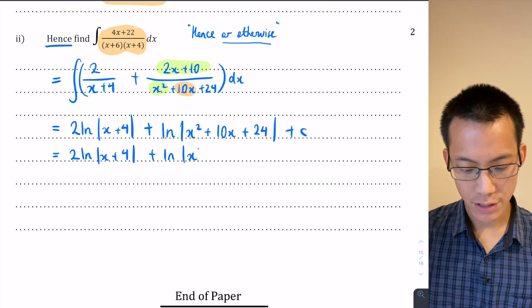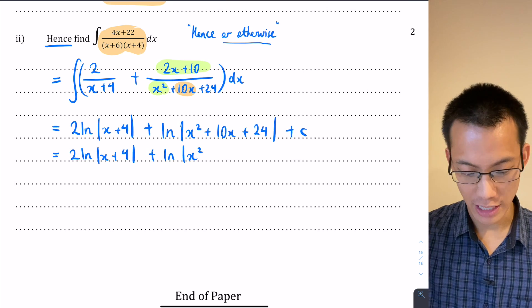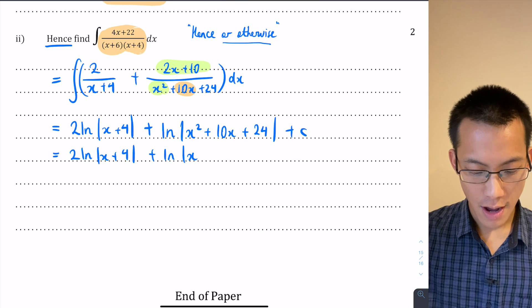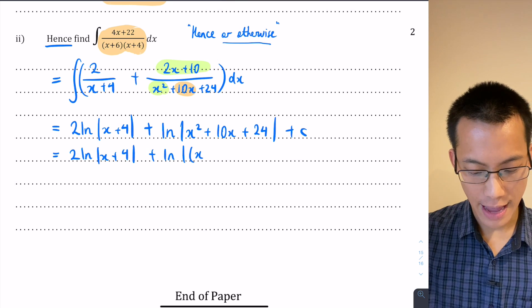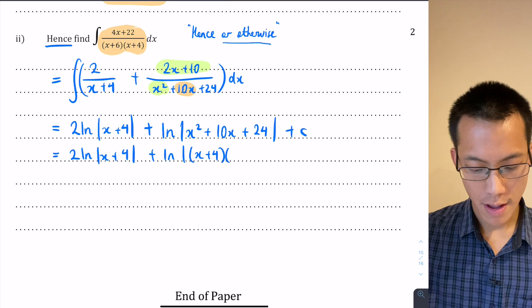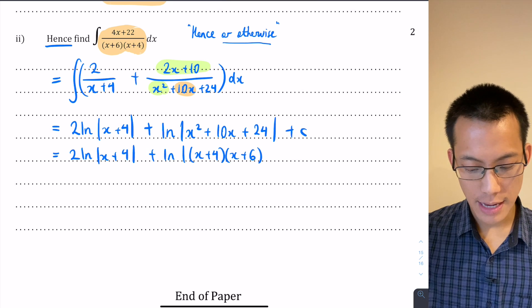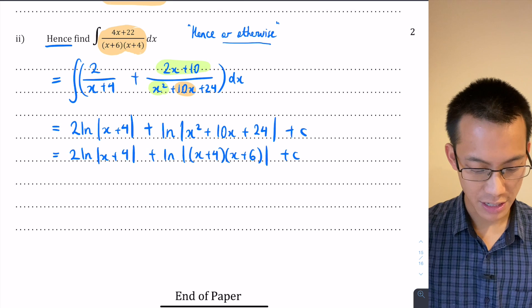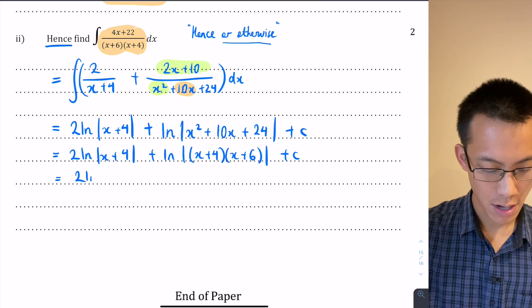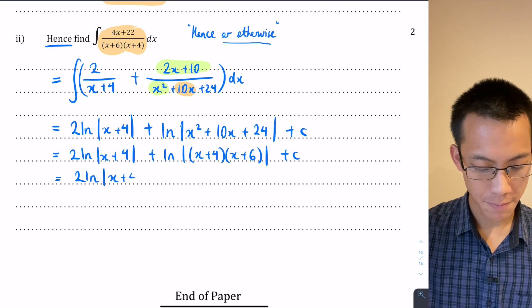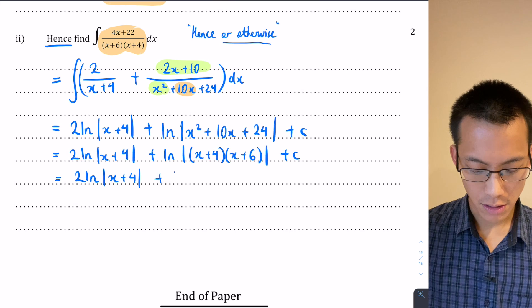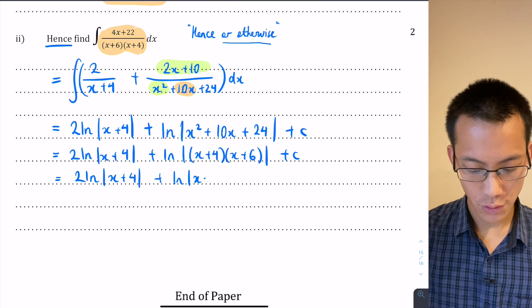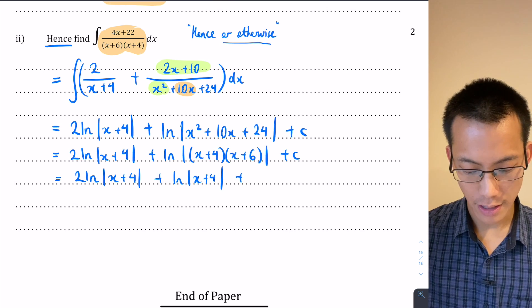So this guy on the right hand side I can actually break into two different functions. So it's 2 ln|x+4| plus ln|x+4| and ln|x+6| plus my constant. You can see here what I've created is some actual like terms. I've got a single log of (x+4) here, and then I've got two of them over on the left.